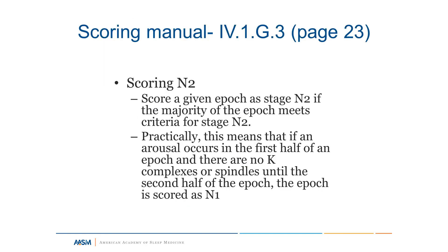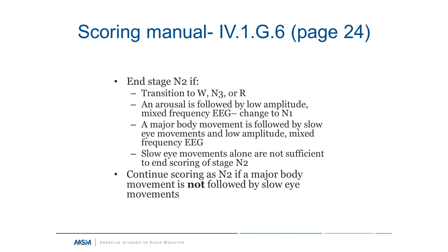For scoring N2, you score a given epoch as N2 if the majority of the epoch meets criteria. Practically: if an arousal occurs in the first half and there are no K-complexes or spindles until the second half, it's N1. If there is a K-complex or spindle in the first half, more than half the epoch meets criteria for N2. You end stage N2 if there's a transition to wake, N3, or stage R, or if there's an arousal followed by low amplitude mixed frequency EEG — changing it to N1. A major body movement followed by slow eye movements would also end N2, but slow eye movements alone are not sufficient; you need slow eye movements with the arousal.